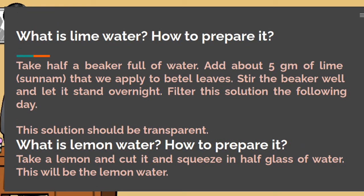Most of the students are confused by lime water and lemon water, but they are not same. Lime water is made by lime. Lemon water is made by lemon juice. Lemon water can be prepared taking a lemon, cut it and squeeze it. Collect the lemon juice in half glass of water and this will be the lemon water.